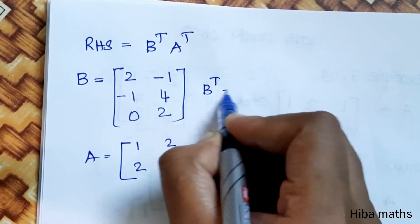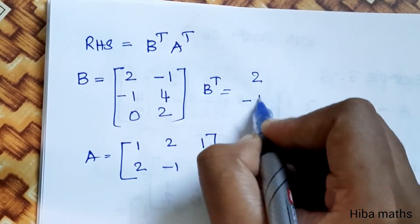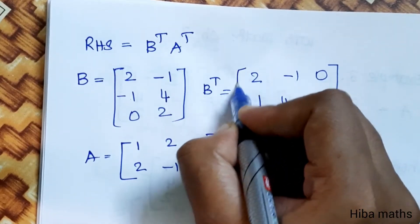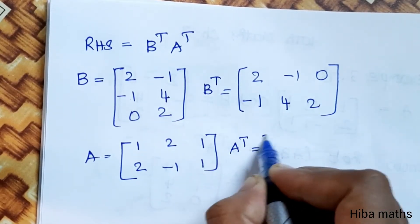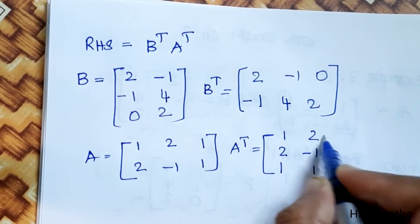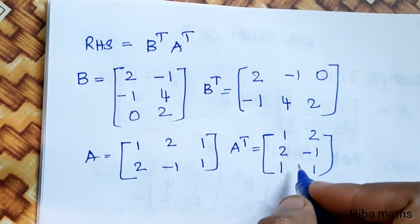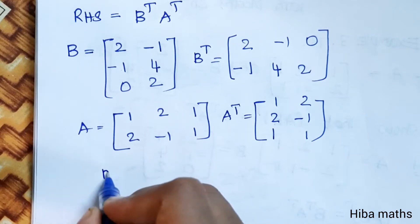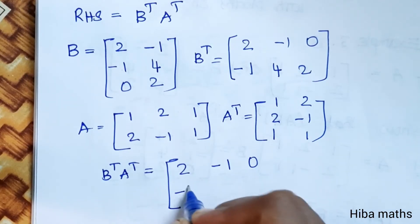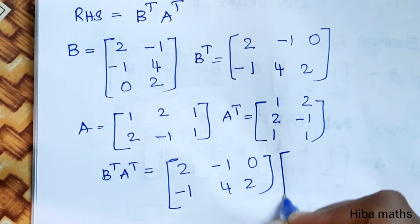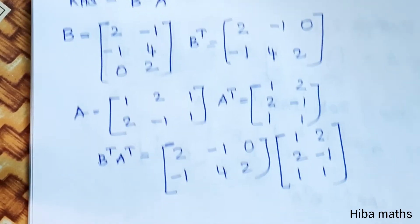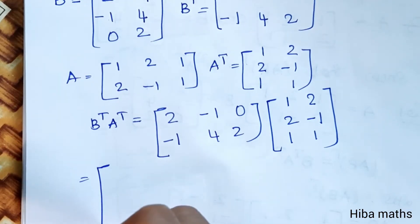BᵀAᵀ: Bᵀ has 3rd row and 3rd column. This is the third column and third row. Now we have two rows. Now we multiply BᵀAᵀ. Bᵀ: 2, -1; -1, 4; 0, 2. Aᵀ is [1 2; 2 -1; 1 1]. Now using the row-column method to solve the problem.